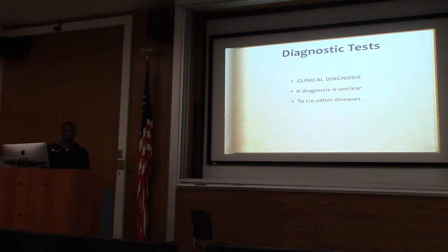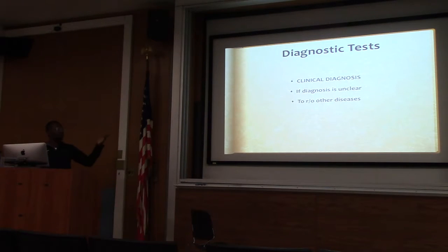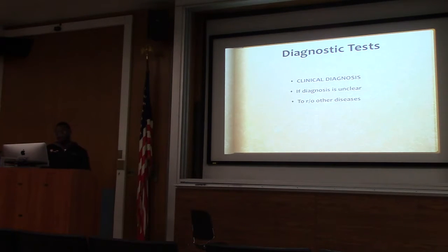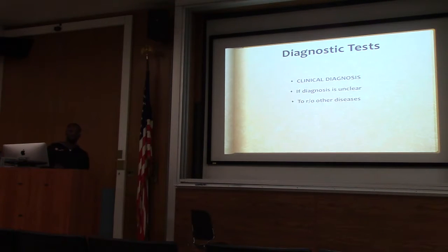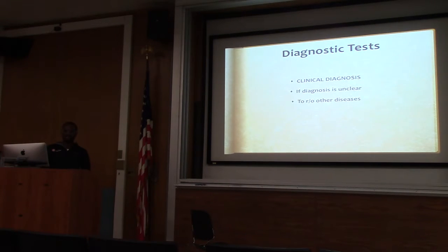Tryptase is a longer-lasting peptide in the body. Whenever a mast cell degranulates, tryptase is also released, and tryptase can last for hours. So if you really want to confirm anaphylaxis, you can send tryptase levels, which will be elevated. You can also get a urinary histamine metabolite to help confirm, and it also helps rule out mastocytosis, which presents like anaphylaxis. The difference is that in mastocytosis the person always has elevated urinary histamine, whereas in anaphylaxis the urinary histamine level is only elevated during that particular episode, and at baseline it would be normal.